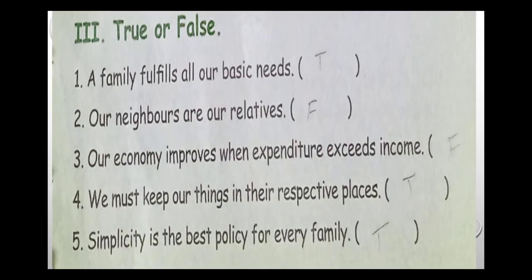The next exercise is true or false. First: a family fulfills all our basic needs — the answer is true. Second: our neighbors are our relatives — the answer is false. Third: our economy improves when expenditure exceeds the income — the answer is false.